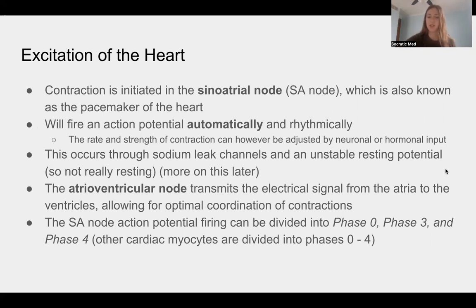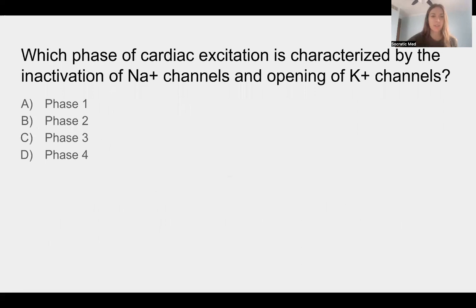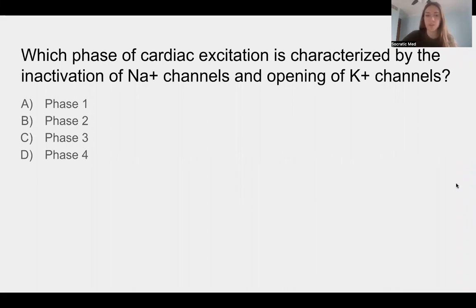The SA node action potential is divided into phase zero, phase three, and phase four, while other cardiac myocytes are divided into phases zero through four. Question three: which phase of cardiac excitation is characterized by inactivation of sodium channels and opening of potassium channels? The answer is A, phase one. We're going to characterize all of these phases — what channels are opening and what stage of contraction the heart is in.